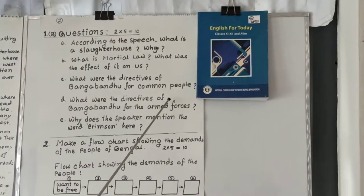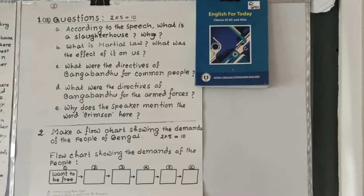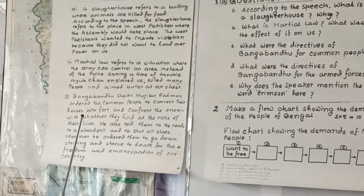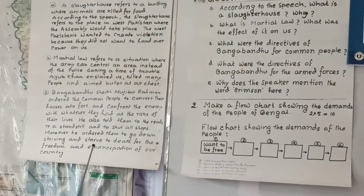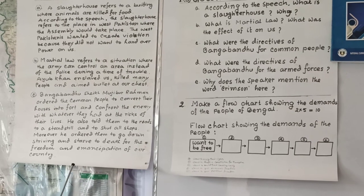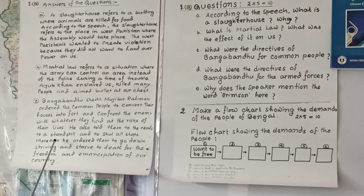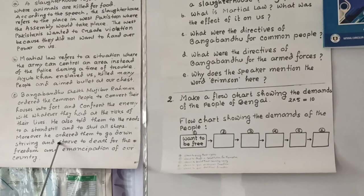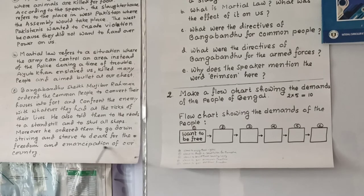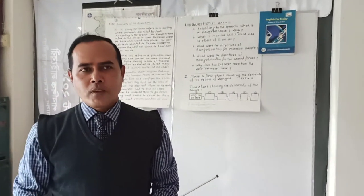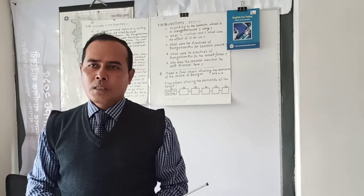Question C: 'What were the directives of Bangabandhu for common people?' The answer: 'Bangabandhu Sheikh Mujibur Rahman ordered the common people to convert their houses into forts and confront the enemy with whatever they had at the risk of their lives. He also told them to stand still and to shut all shops. Moreover, he ordered them to keep striving and starve to death for the freedom and emancipation of their country.' Questions should always be relevant to your answers — irrelevant answers do not carry credit.